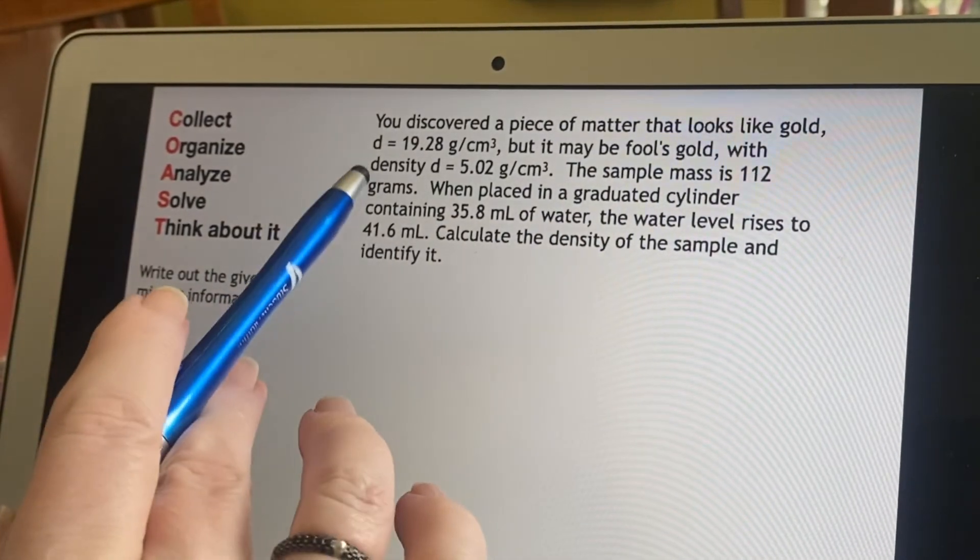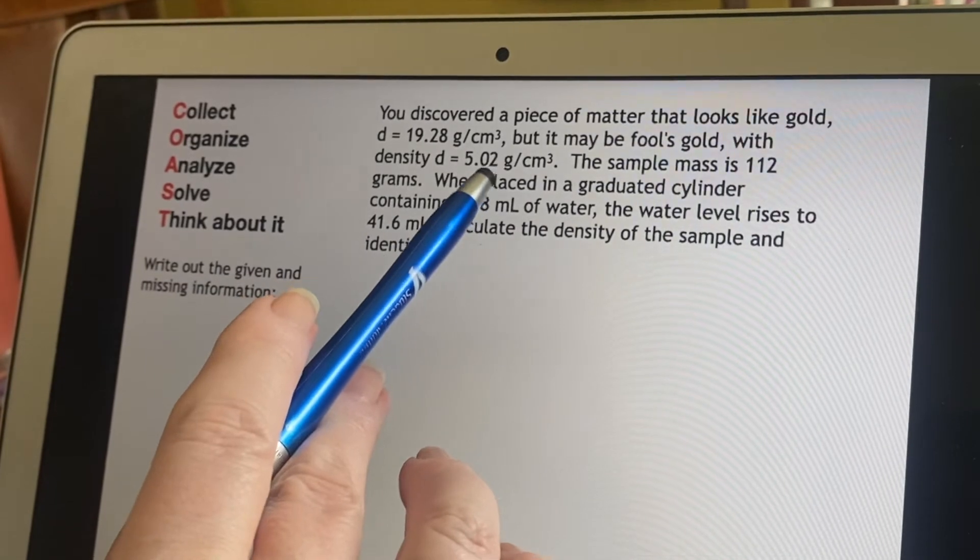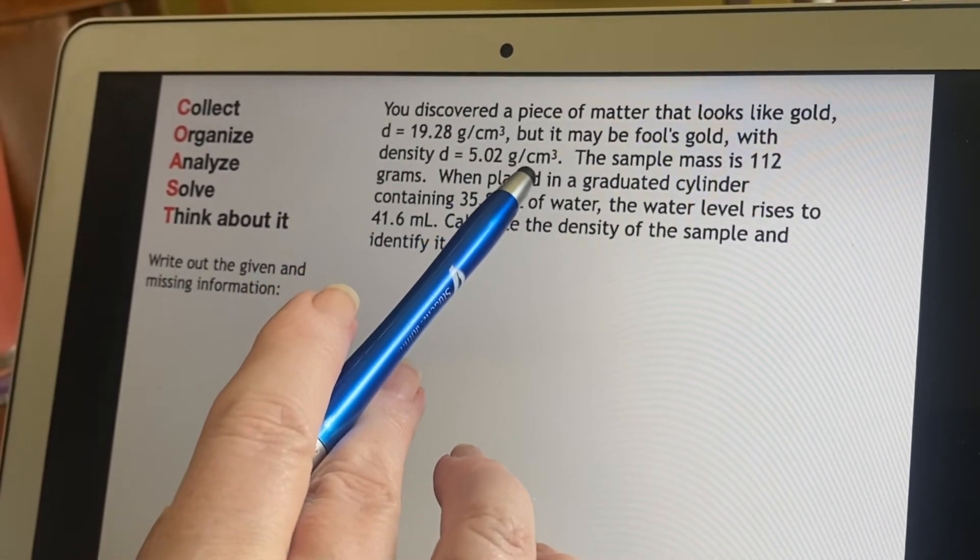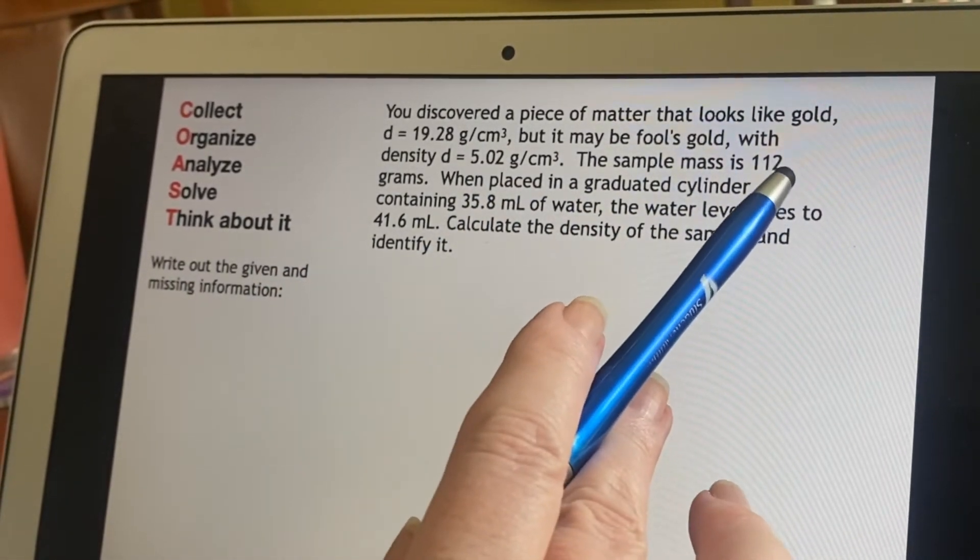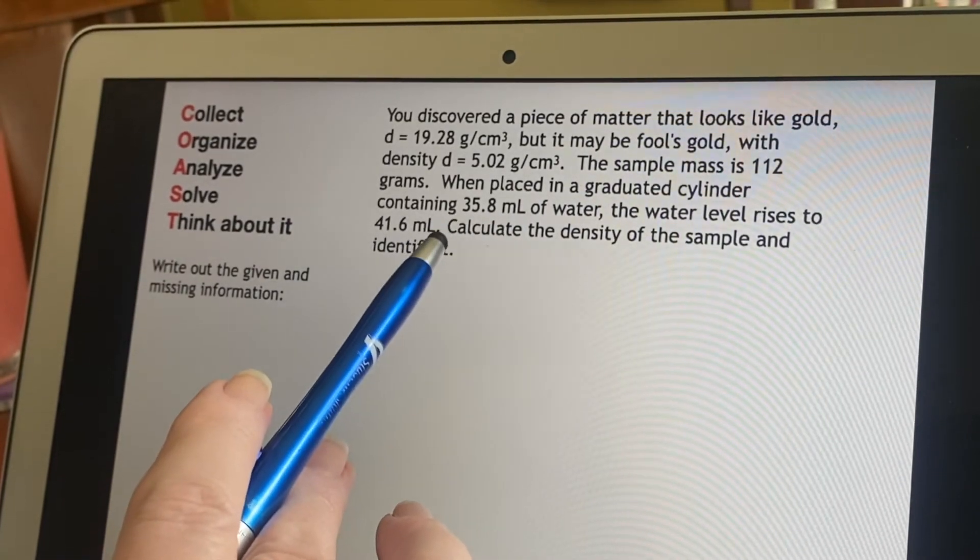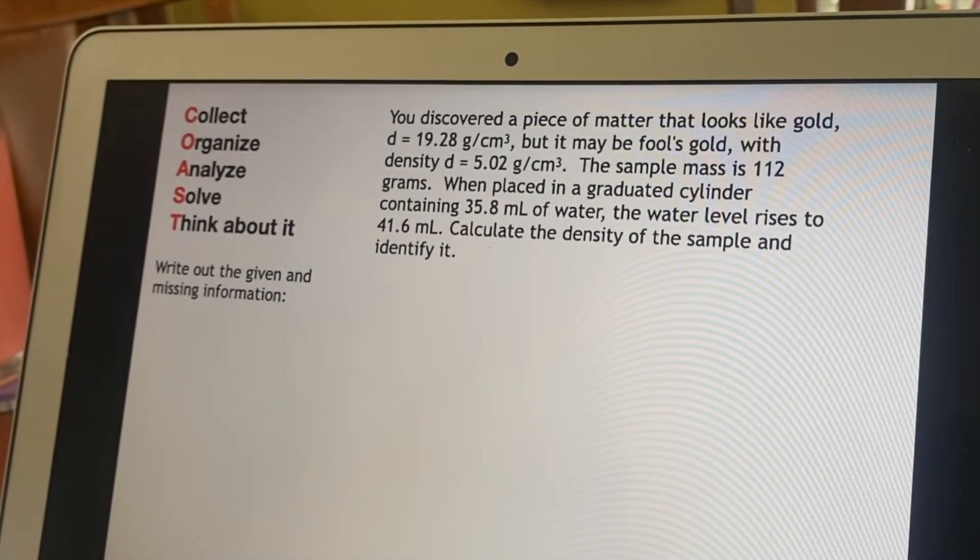That's good because if you look at density, it's grams per cubic centimeter. So if I know the number of grams and I know how big it is, I should be able to calculate the density. All right.